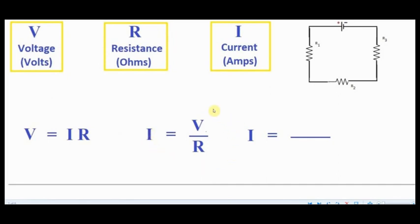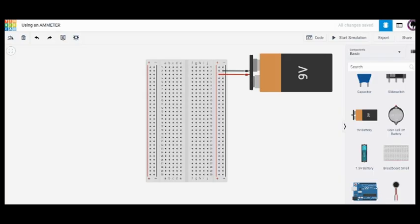So there's a relationship shown here by something called Ohm's Law which determines what the current will be if we know the voltage and we know the resistance in a circuit. So we're going to go into Tinkercad and we are going to build a simple circuit.